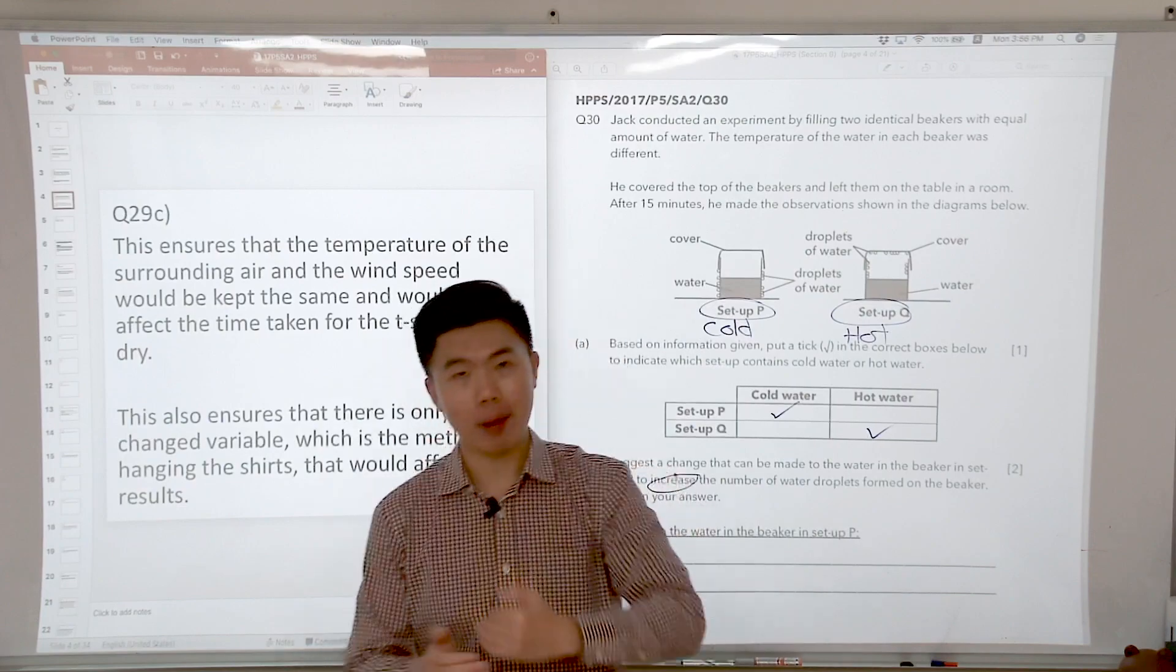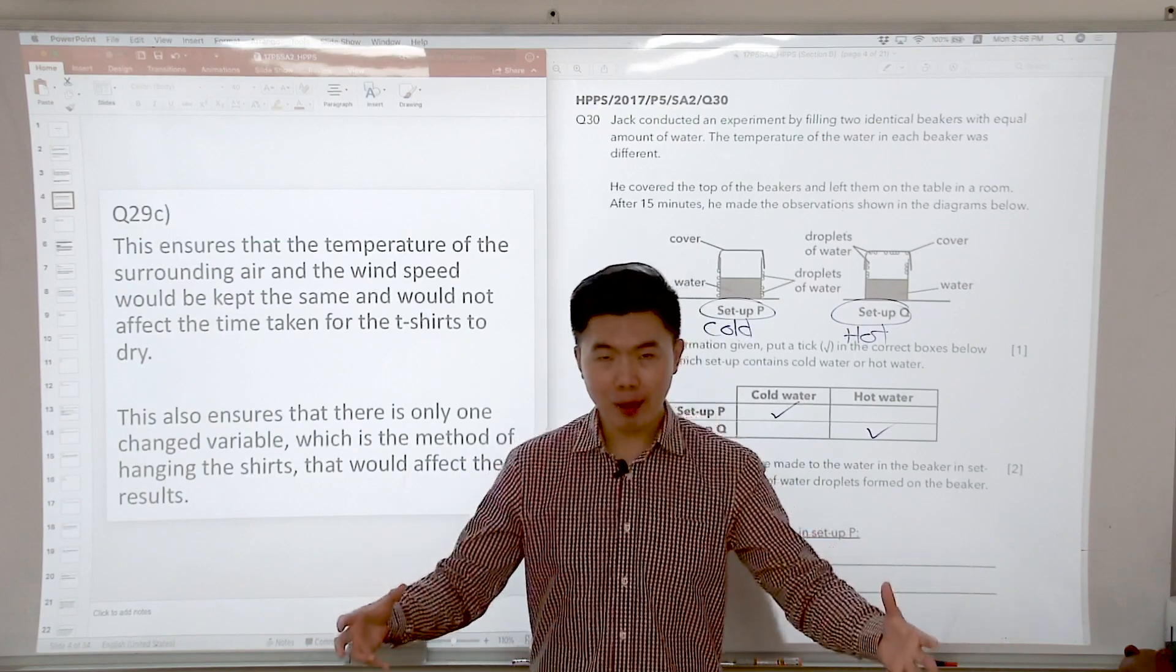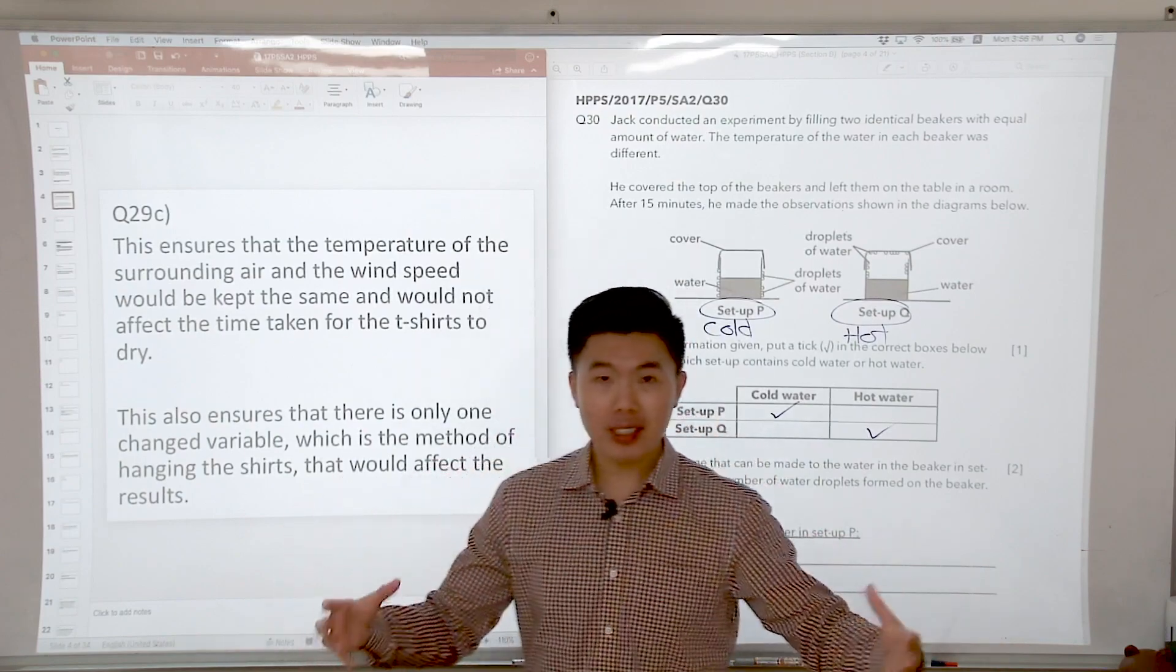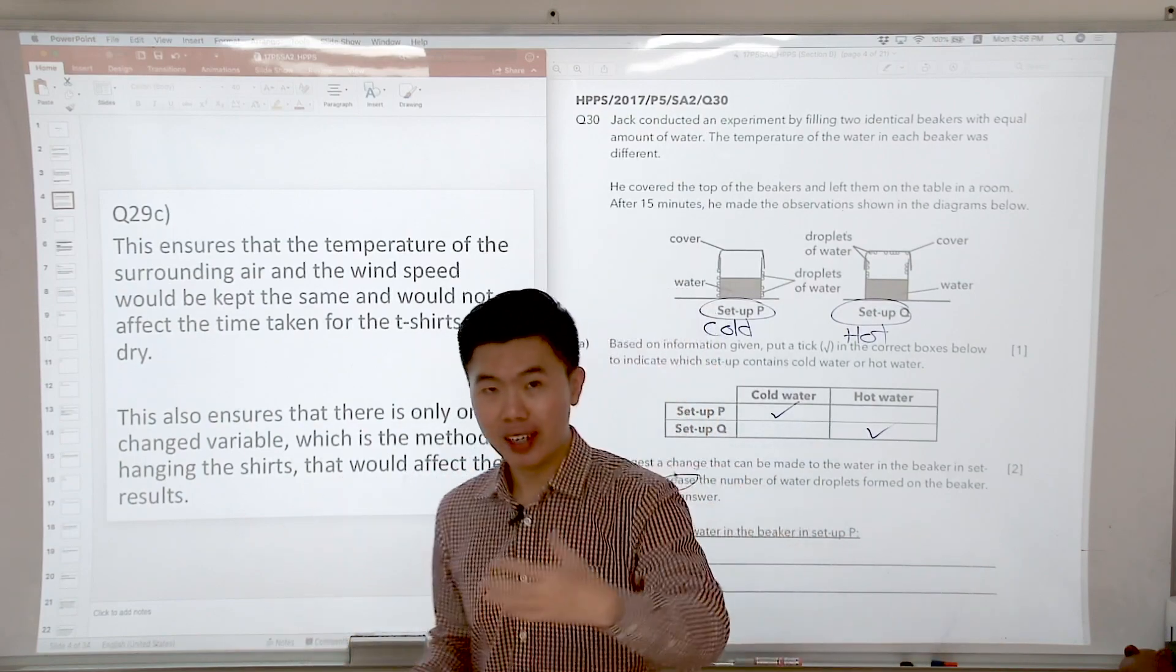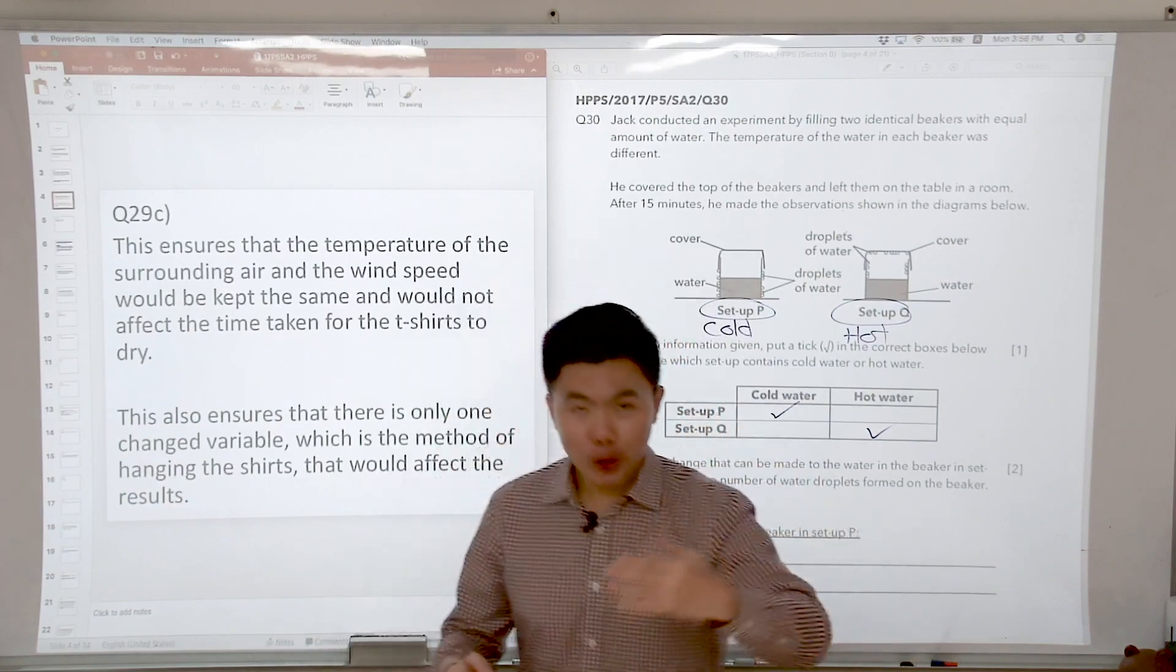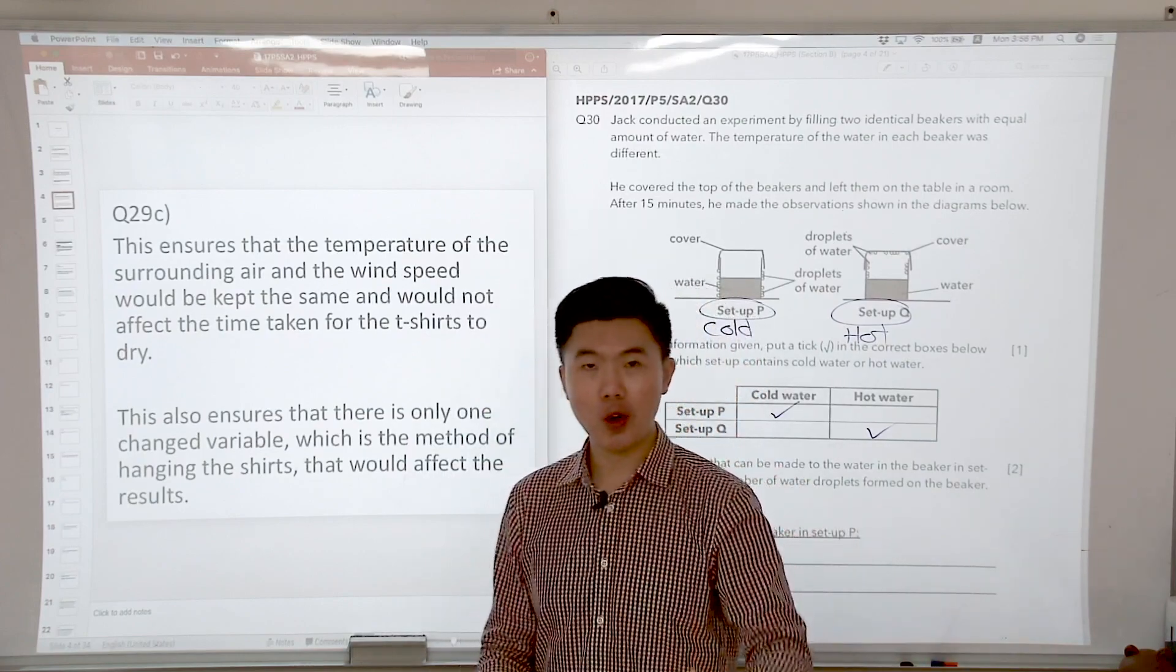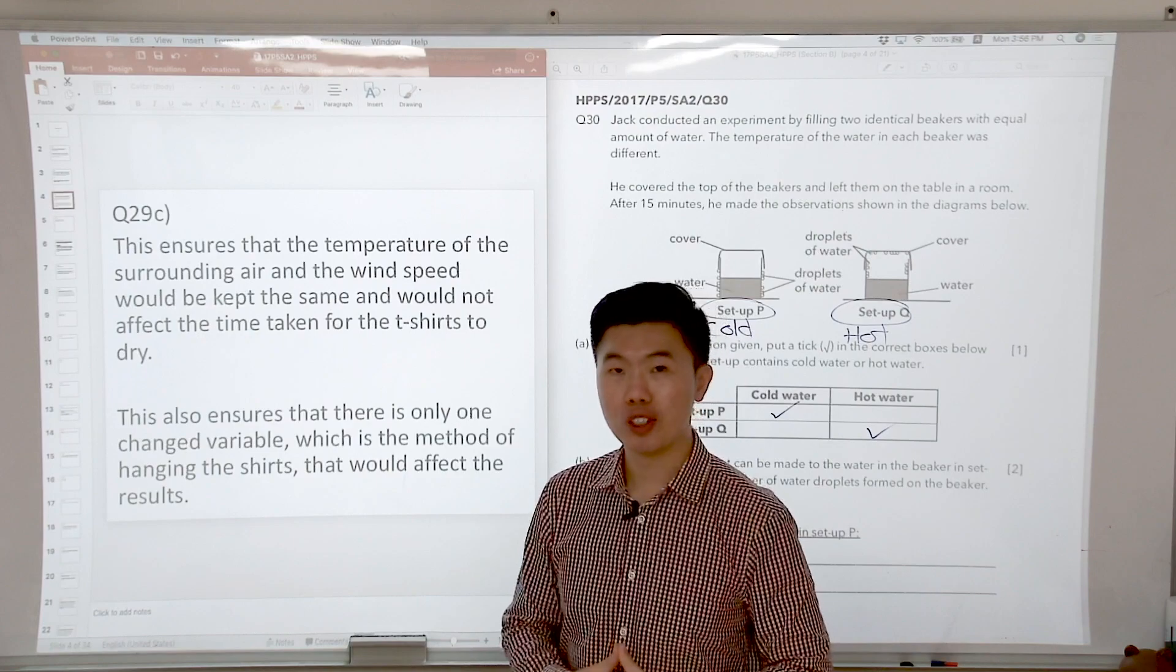So what happens when we decrease the temperature of the water? The warmer water vapor from the surrounding air will come into contact with the cooler outer surface but because now the cup is colder, the water vapor will lose heat faster to the cup and condense to form more tiny water droplets.